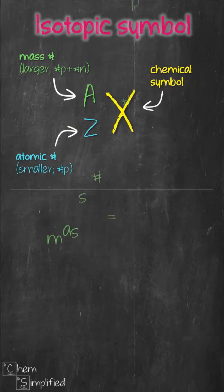Quick reminder, mass number is the sum of proton and neutron number whereas atomic number tells us the number of proton in the atom.